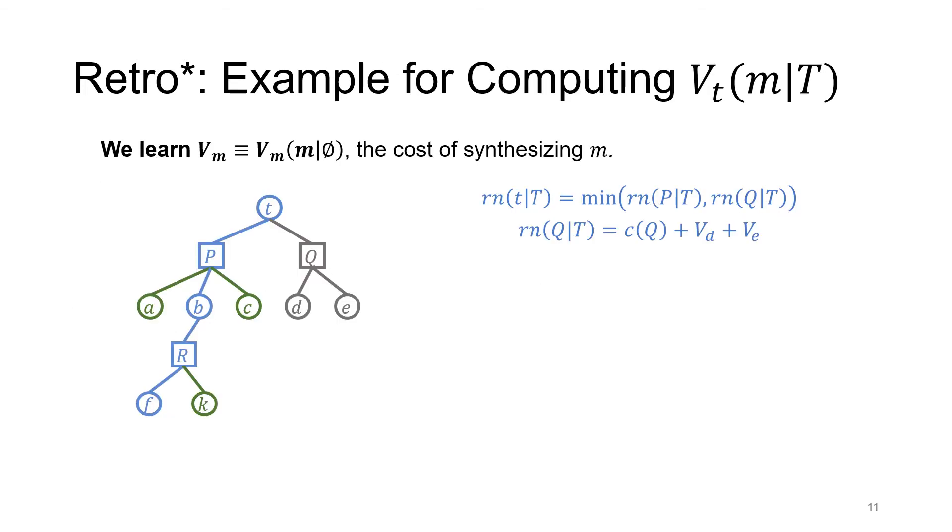Here we provide two examples for computing the reaction number and the value function. According to the recursive rule for reaction numbers, in this figure, the reaction number for the target molecule T is the minimum of the reaction number of P and the reaction number of Q. And then the reaction number of Q is the sum of the cost of Q and the reaction number of all its reactants, which is Vd plus Ve. And then to compute the value for a frontier node F, we sum over the cost of all its ancestor reactions, which is Cp plus Cr, and then the reaction numbers for the sibling molecules, which is Va plus Vc plus Vf plus Vk.